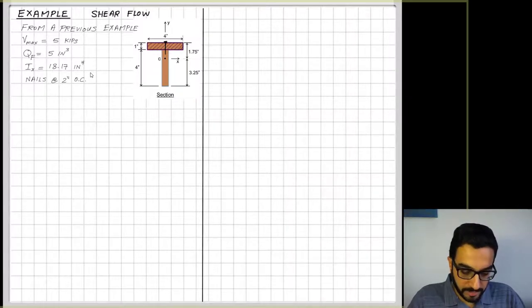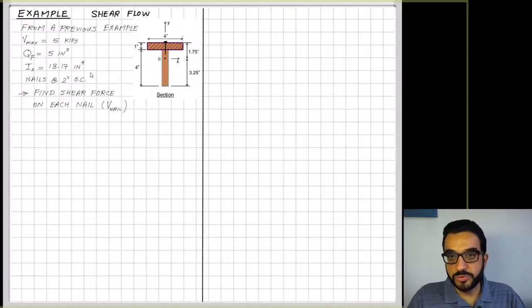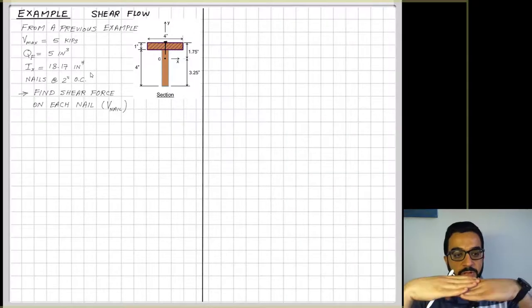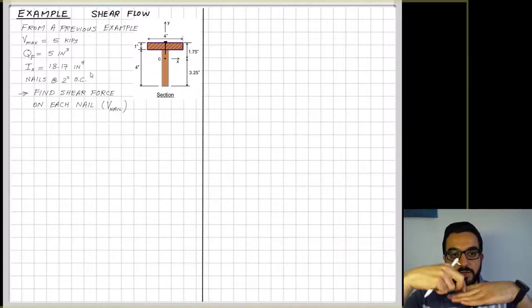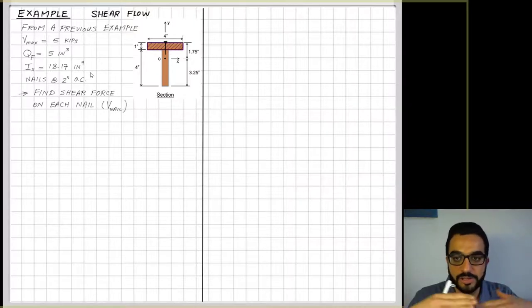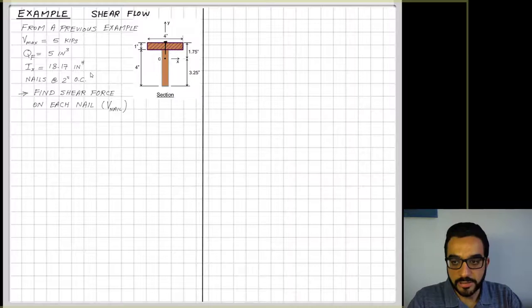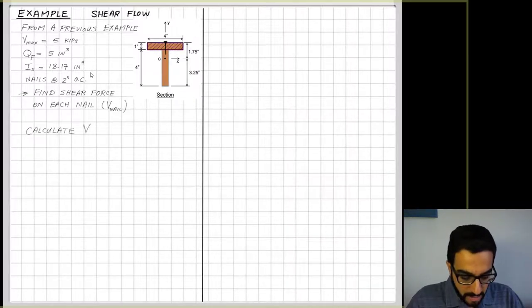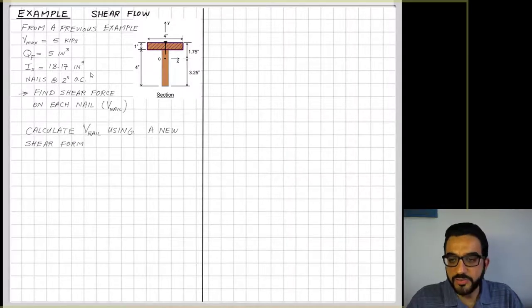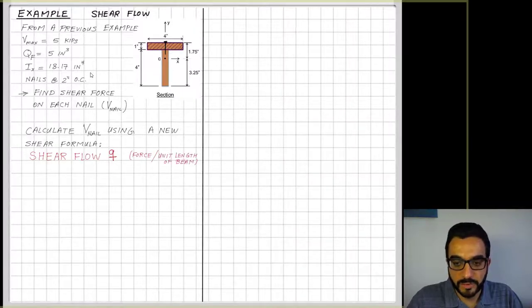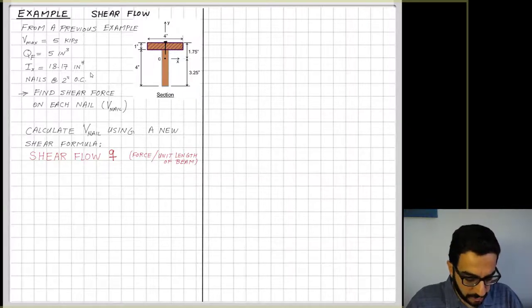The idea now is we would like to also design for the nails, so we need to figure out how big the nails should be. To know that, you have to figure out the shearing force that tries to make them fail, as the flange on the web tends to slide and the nails hold them. We want to see how much of that sliding shear is carried by each nail. We call this V_nail, and we'll calculate V_nail using a new kind of shear formula called shear flow, represented as q, which is force per unit length of beam.